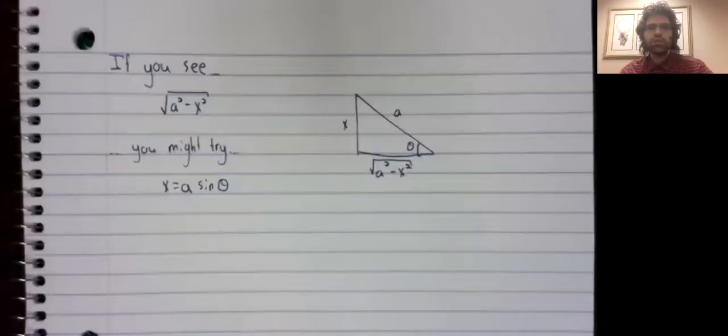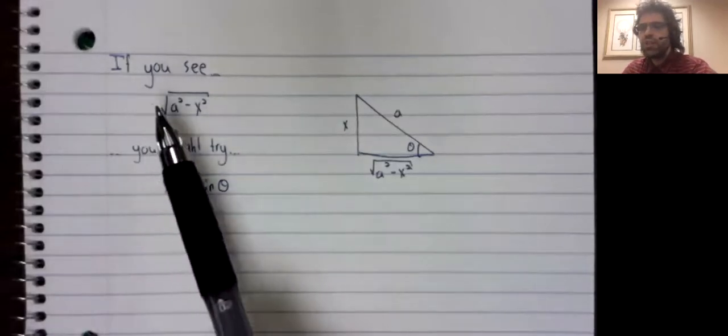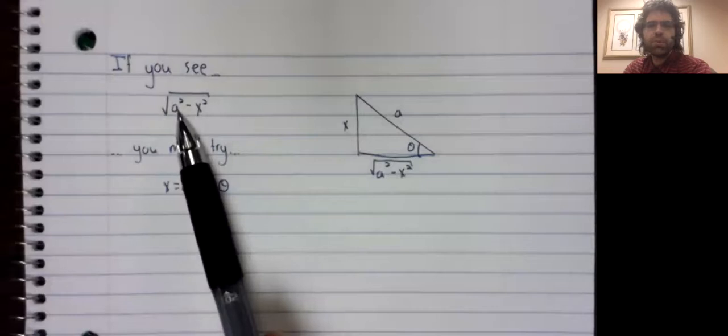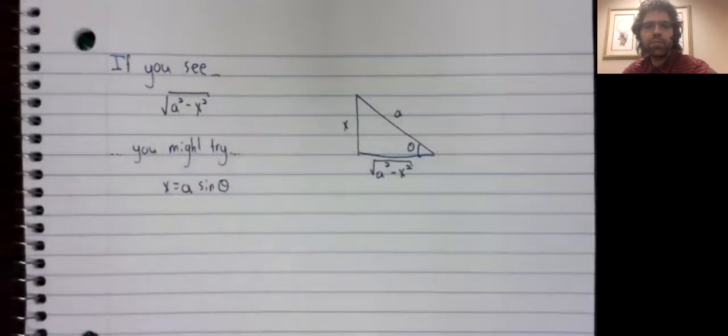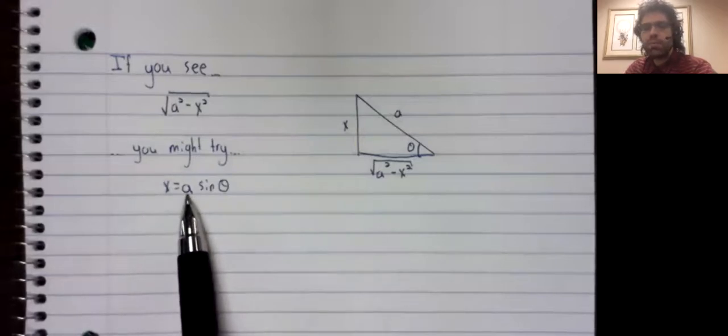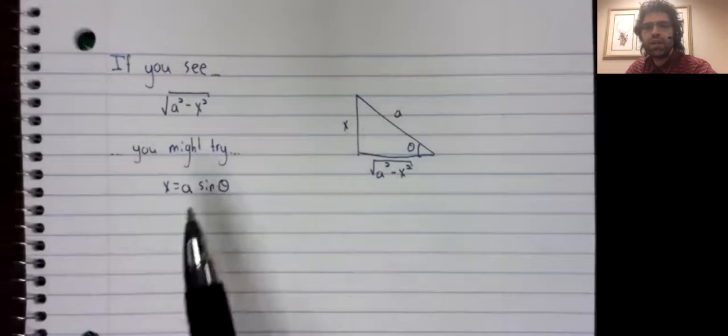In this video, we will formally present the first of our three substitutions and do an example involving it. Trigonometric substitution says that if you see a square root of a number squared minus x squared, you might try letting x equal that number times the sine of theta.